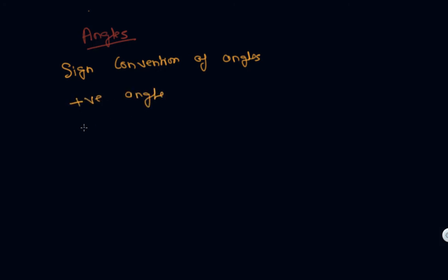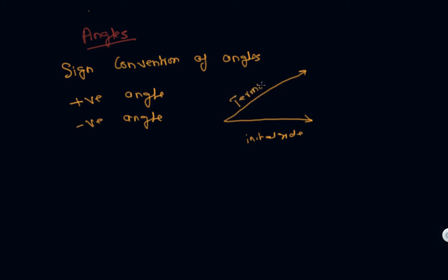Let's see what a positive angle is. We have an initial side and a terminal side. If we take the angle in the anticlockwise direction — meaning going from the initial side to the terminal side anticlockwise — then the angle is taken to be positive.